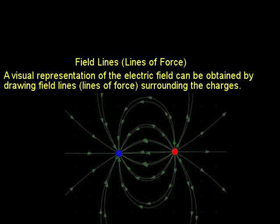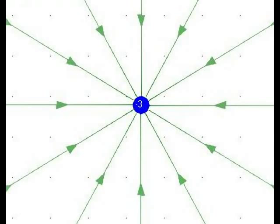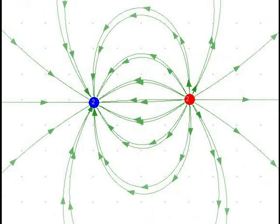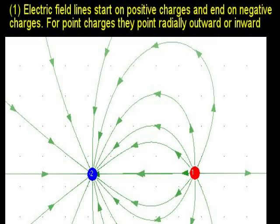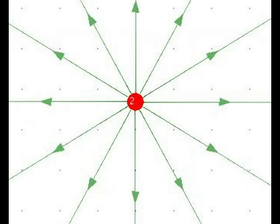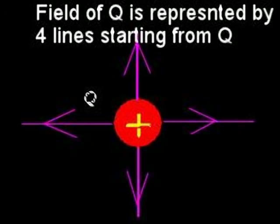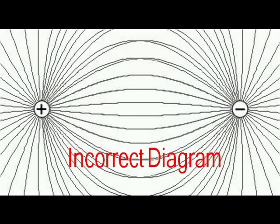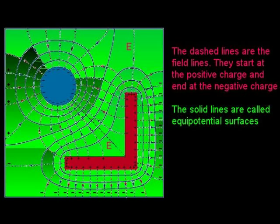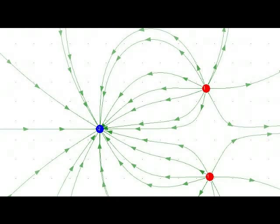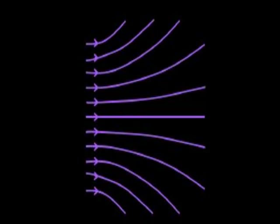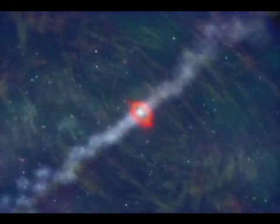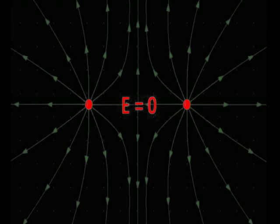Field lines, or lines of force: a visual representation of the electric field can be obtained by drawing field lines surrounding the charges, subject to the following rules. Electric field lines start at positive charges and end at negative charges; for point charges they point radially outward or inward. The number of field lines drawn is proportional to the magnitude of the source charge. Field lines do not cross each other. On conductors, field lines start and end perpendicular to the surfaces. The direction of the field at any point due to a number of charges is simply the direction of the resultant electric field vector at that point, using the superposition principle. Electric field lines may bend in space as they follow the direction of the resultant force. Changes in electric field travel at the speed of light. Field lines do not exist in regions where there is no net force.